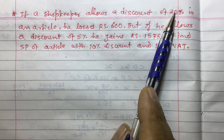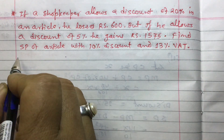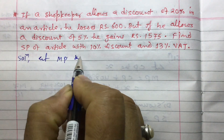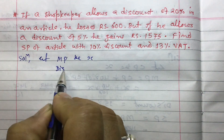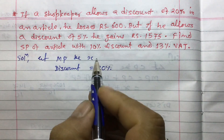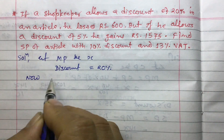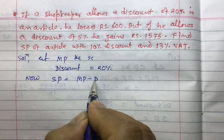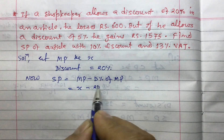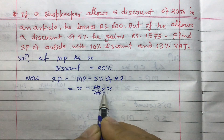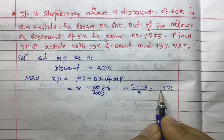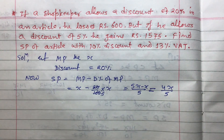Since a discount is given, discount is always calculated on marked price. Let marked price MP equal to X. In the first case, discount equals 20%. So selling price SP equals MP minus discount percent of MP, which is X minus 20 by 100 times X. Taking LCM, this gives 4X by 5. So selling price is 4X by 5.